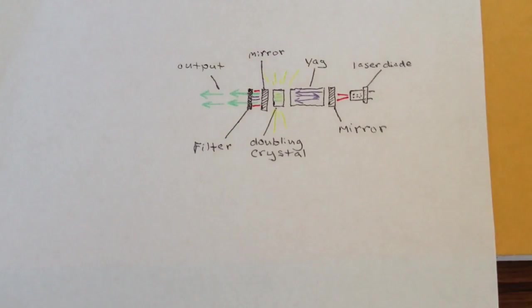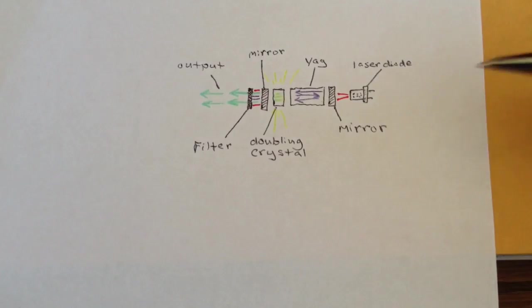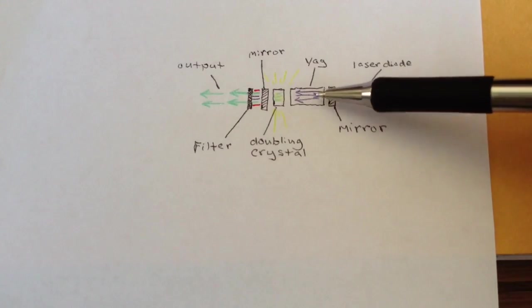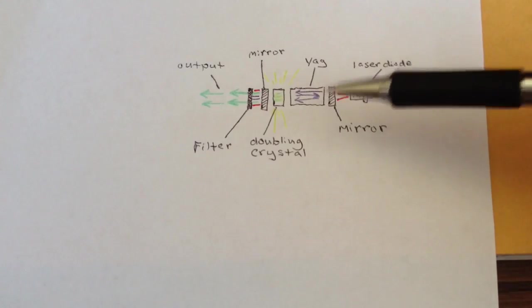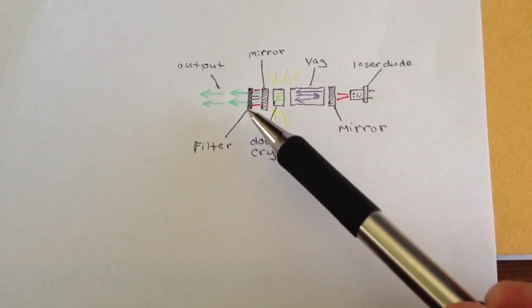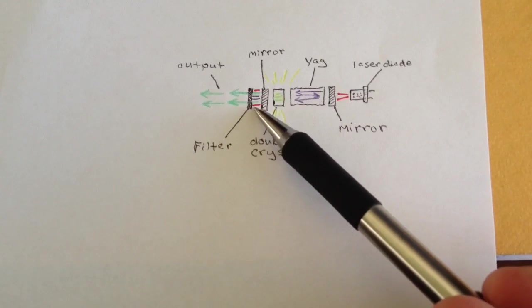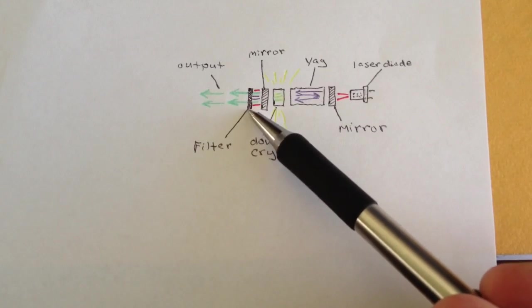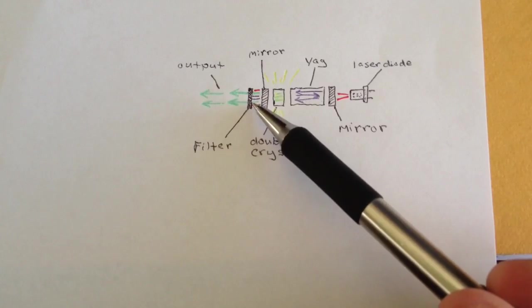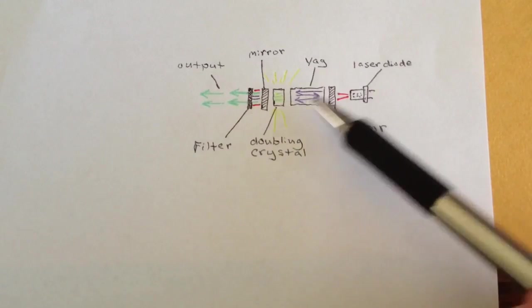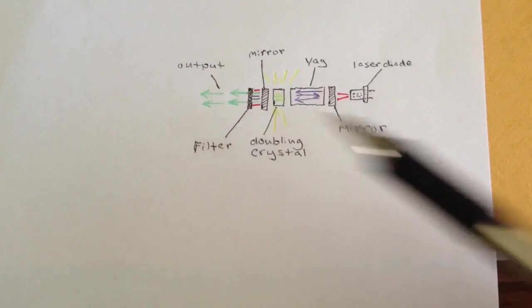So that's the reason the Chinese laser pointer will burn things. That's also the reason why you can put a filter to block the green light and still see an output with an infrared camera because you've got dangerous power levels from these two lasers that are still present in the output because the manufacturers did not put a filter. If they did, they didn't put a very good one. They didn't put a filter in the arrangement to block the high power wavelengths out and to leave only the green.